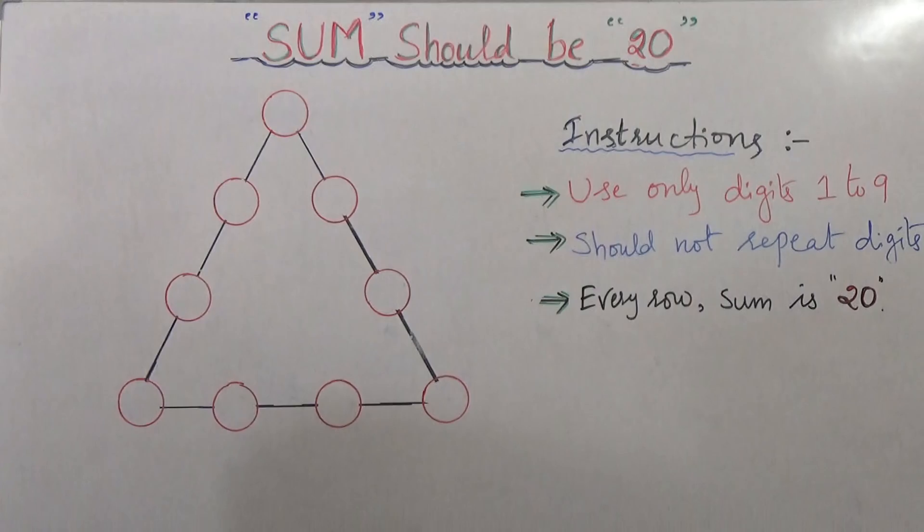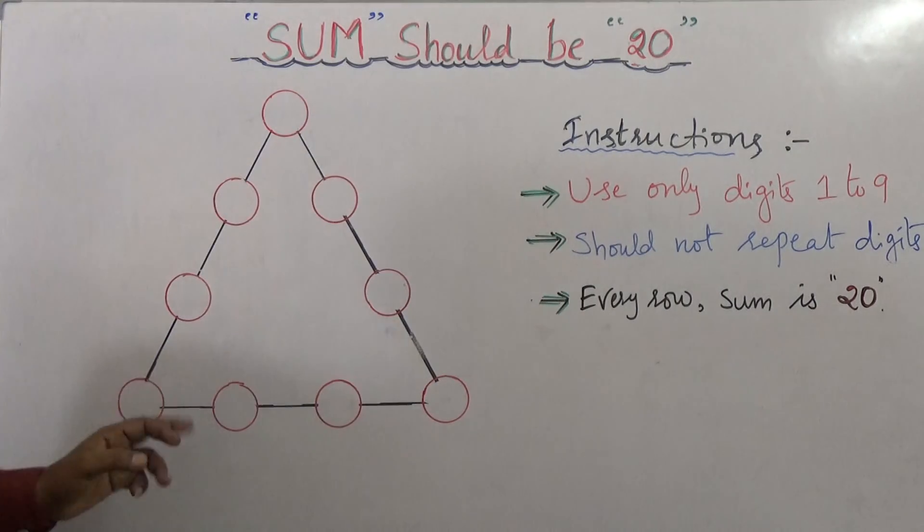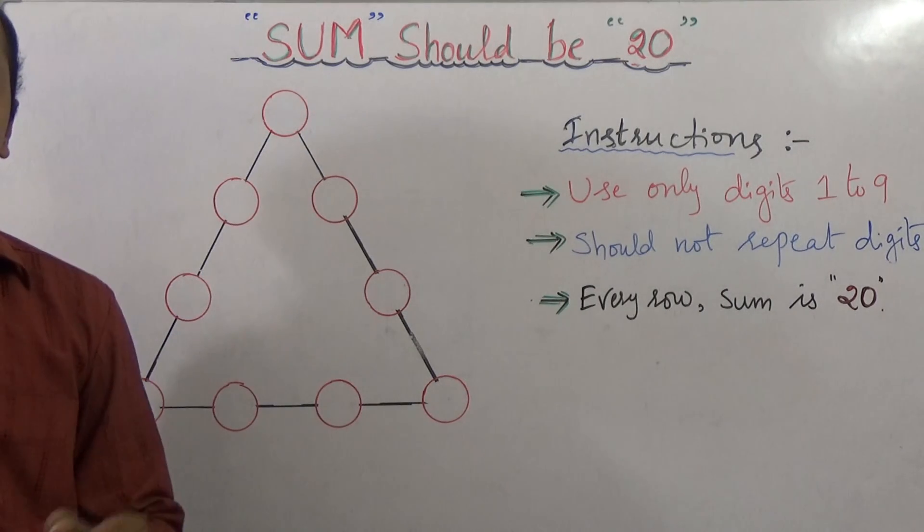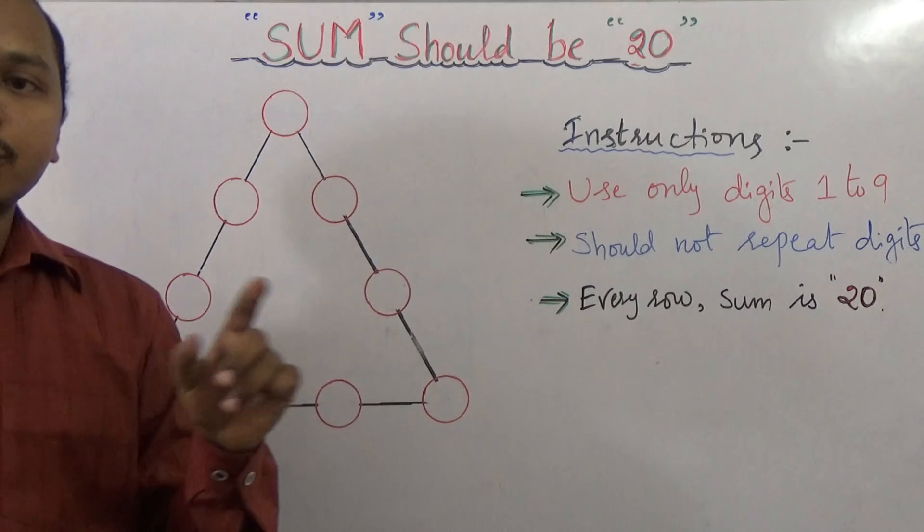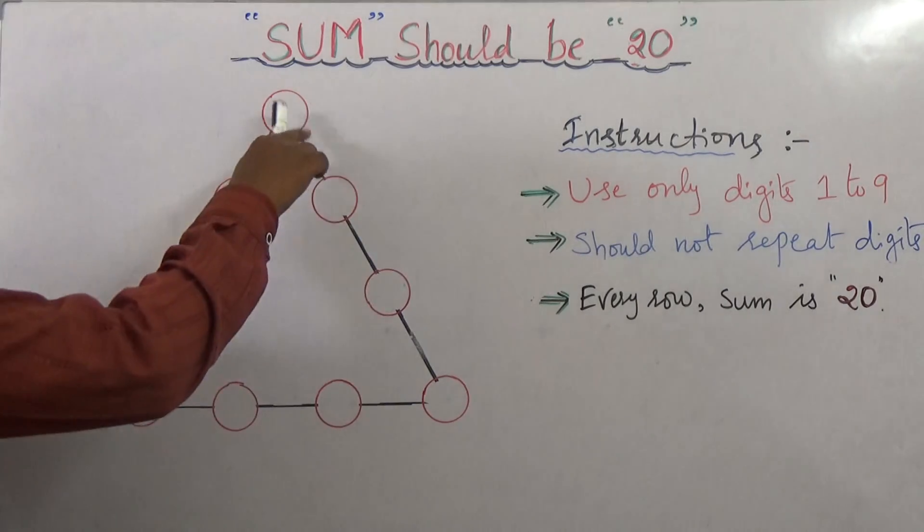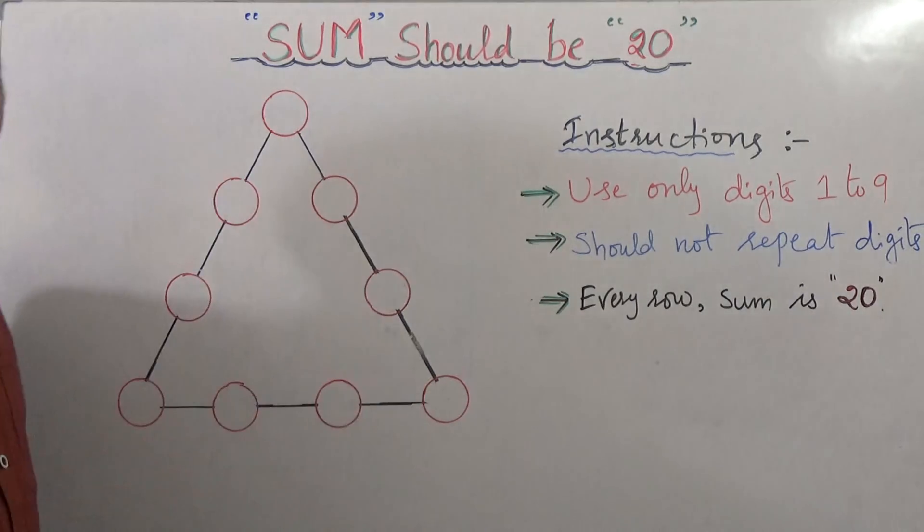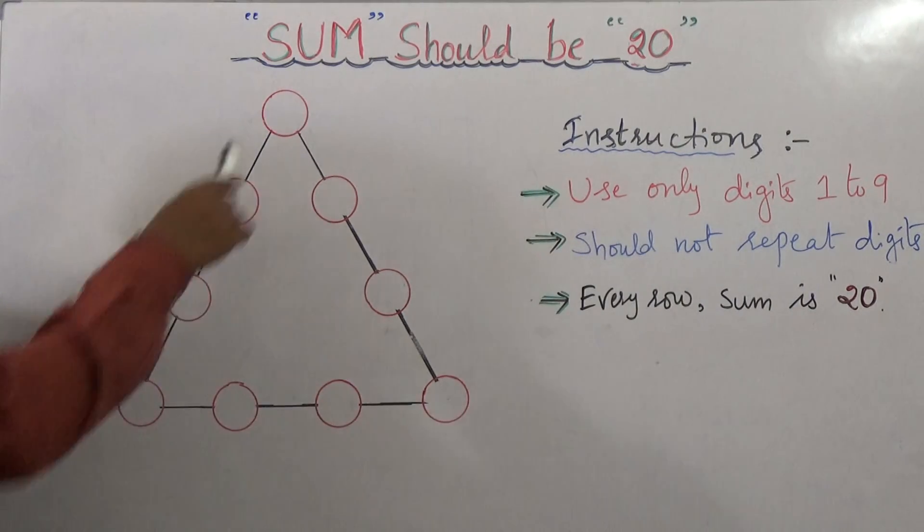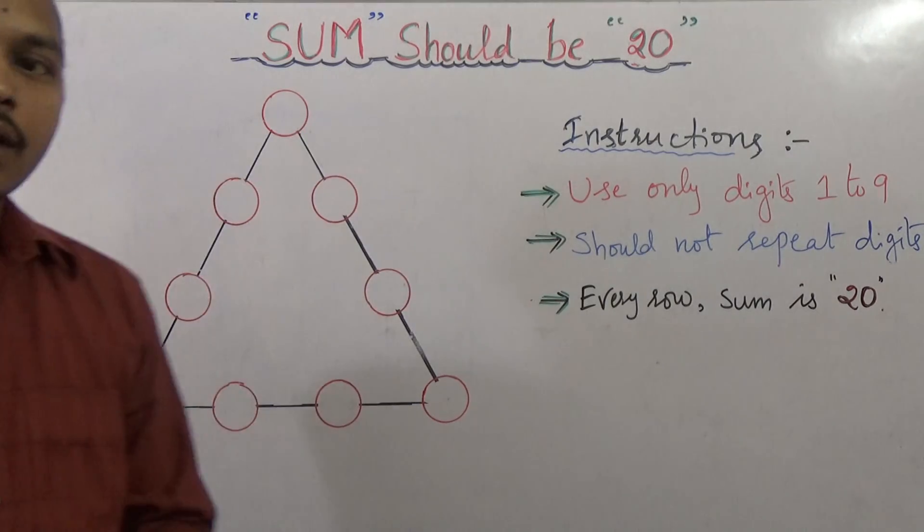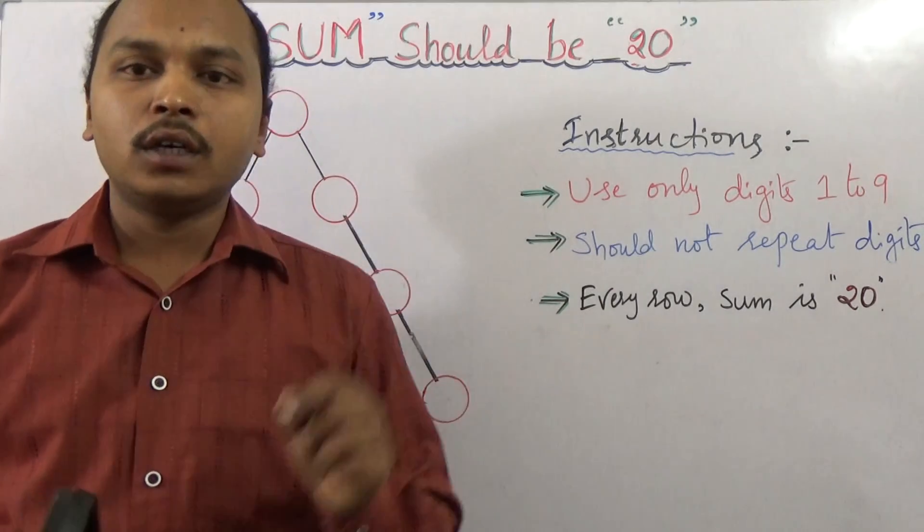So let us see this diagram. There are three rows. In every row you would notice four circles - one, two, three, four. In this particular row, and the down row also we have one, two, three, four. Again, this left side also we have one, two, three, four circles. Three circles are common at the place of vertices.